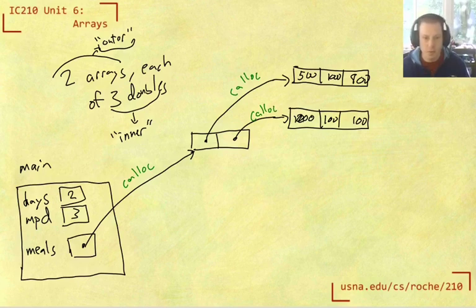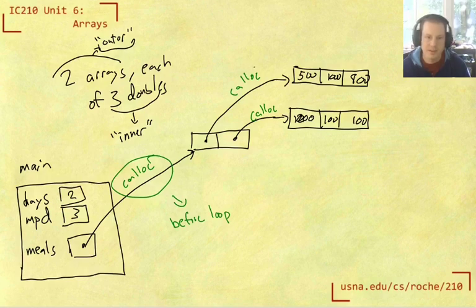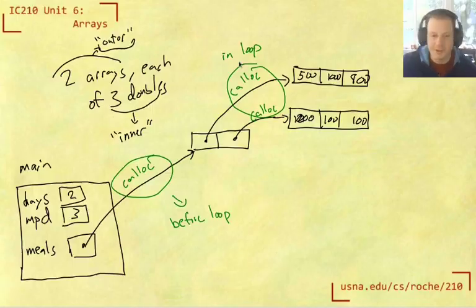And so what we're going to see is one call to calloc, like initially for outside the loop. And then we need to have a loop which does these inner allocations here. So let's see how that works in code now that we've drawn all these nice pictures.